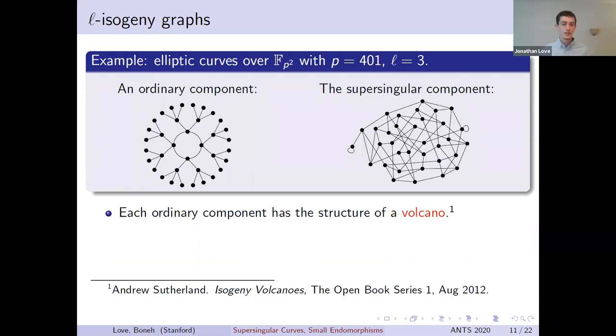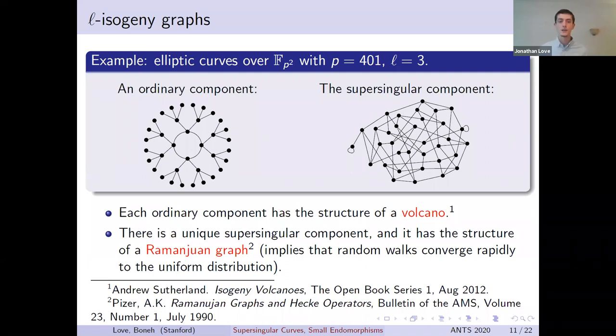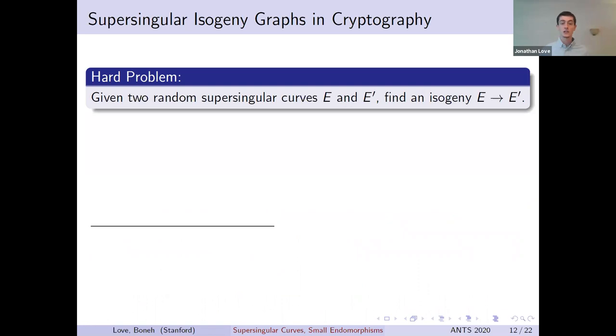But components of supersingular curves have very strong randomizing properties. Specifically, they are Ramanujan graphs, which implies that any random walk will converge extremely rapidly to the uniform distribution on the graph. Because of this strong mixing property, the supersingular components of L-isogeny graphs have been proposed as a source of cryptographic primitives. While it is straightforward to compute isogenies from a given curve, it is believed to be very hard to find an isogeny between two randomly selected elliptic curves. A number of cryptographic primitives have been built around this hard problem, and while I sadly won't have time to give them all their proper due, I wanted to list a few of them.